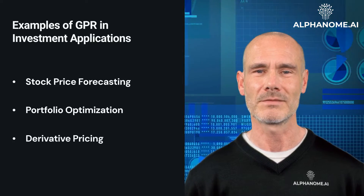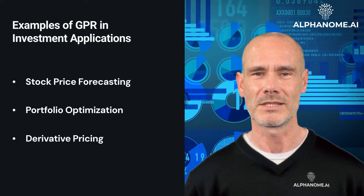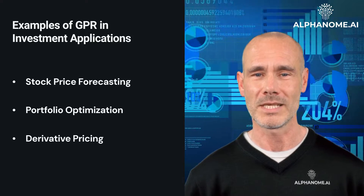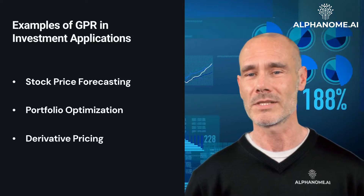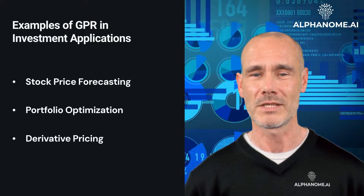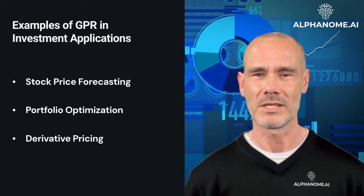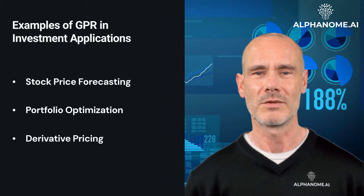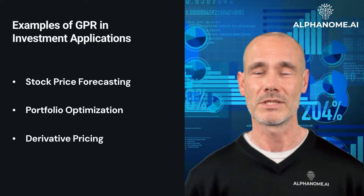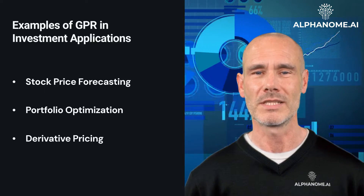Derivative Pricing: GPR can be applied to pricing financial derivatives, such as options and futures contracts, by modeling the underlying asset's price dynamics and accounting for factors like volatility, interest rates, and time to expiration. For example, GPR can be trained on historical stock prices, implied volatilities, and other relevant variables to predict an option's fair value and associated uncertainty, enabling informed trading decisions.